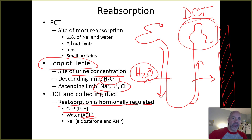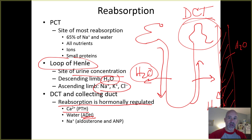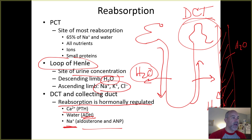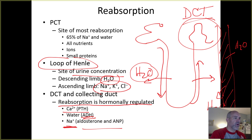ADH, anti-diuretic hormone, acts especially on the collecting ducts. As urine passes through a collecting duct, ADH triggers increased reclaiming of water back out of the developing urine and into the surrounding tissues. Sodium ions are also regulated here — remember aldosterone and ANP (atrial natriuretic peptide) can both impact sodium ion levels. Aldosterone tells the cells lining these structures to reclaim sodium from the developing urine and return it to surrounding tissue fluids.